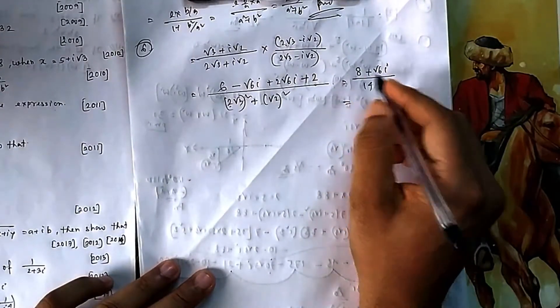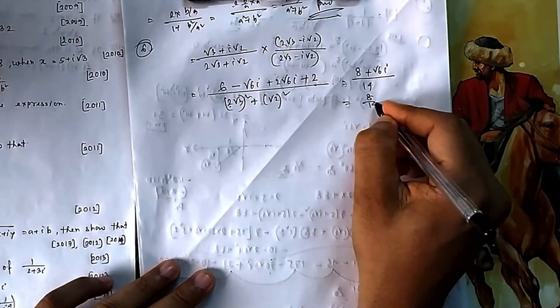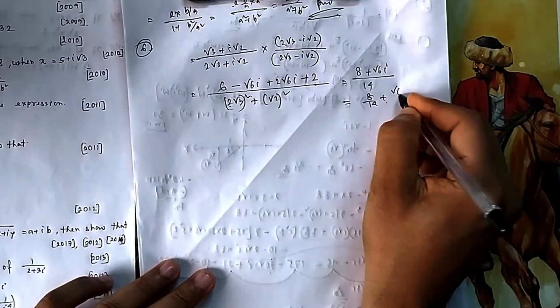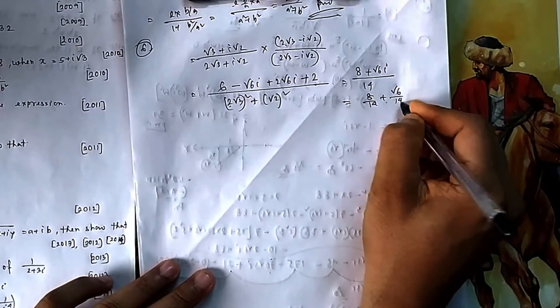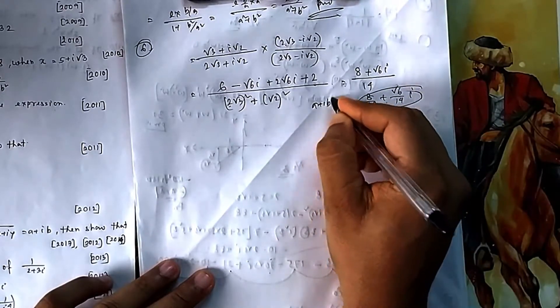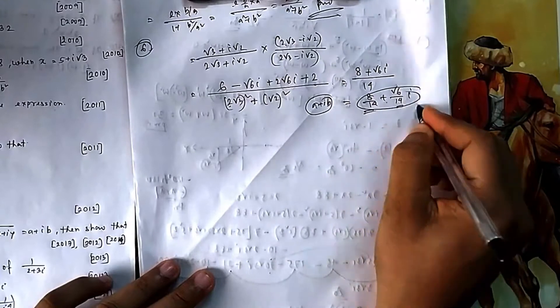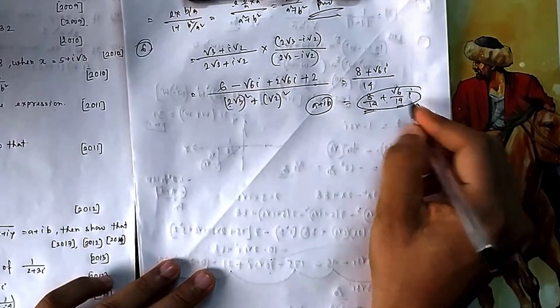So the result is 8/14 + (√6/14)i. This is the required format a+ib, where a = 8/14 and b = √6/14.